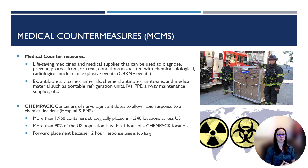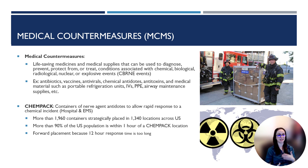An area within the SNS is CHEMPAC — these are containers of nerve agent antidotes to allow rapid response to a chemical incident. These are housed at hospitals or at first responder agencies at confidential locations, but there are almost 2,000 containers strategically placed in 1,340 locations across the United States. This means that more than 90% of the United States population is within one hour of a CHEMPAC location. This is important because unlike most SNS deployments, the 12-hour deployment window is too long for a nerve agent incident, so these containers are pre-positioned and readily available.